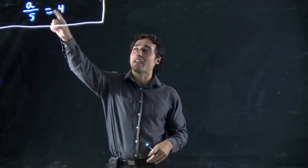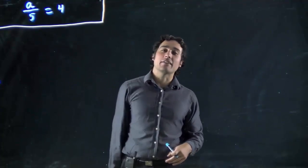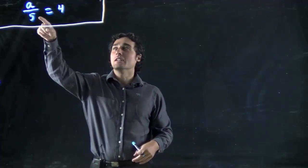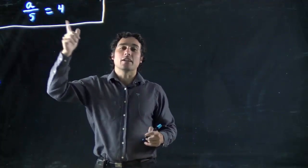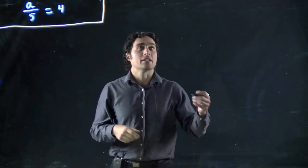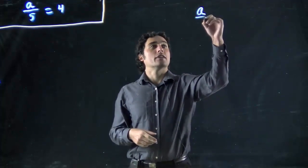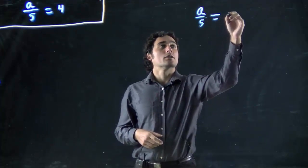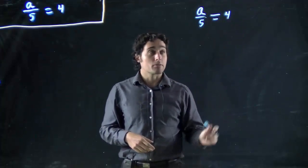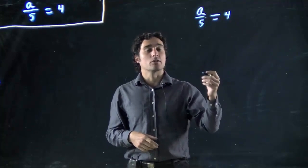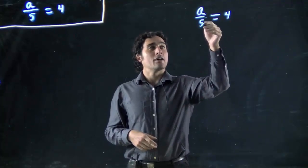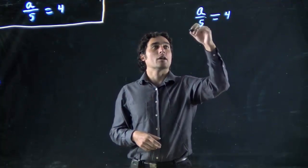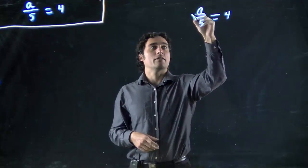Alright, this time we're looking at a over 5 equals 4. Again, we want the variable on its own, so we've got to do the opposite of what's being done. We've got a over 5 equals 4, and actually I should probably have left more room, but if we're dividing by 5, that means we want to multiply by 5.